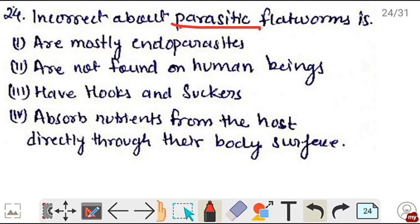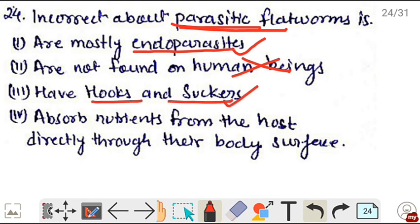Next, incorrect about parasitic flatworms is - are mostly endoparasites, this is true. Parasitic flatworms mostly live inside the body, that is endoparasite. Are not found in human beings, this is completely wrong. Flatworms like Taenia solium and Fasciola attack and are found in human beings. Have hooks and suckers, this is true, these are adaptations for their parasitic form. Absorb nutrients from the host directly through their body surface, this is also true. Incorrect is option 2.